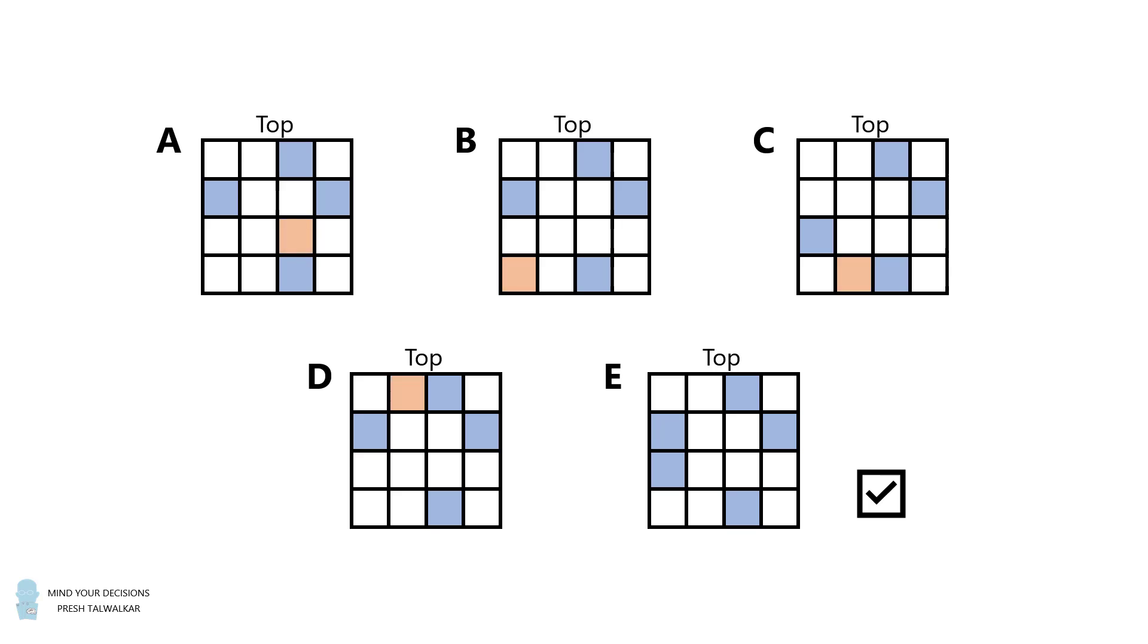This leaves E as the only possibility. In fact, E is the correct answer, and we can check that all of the other four grids differ from grid E by exactly one square.